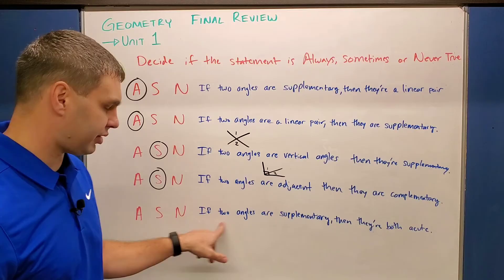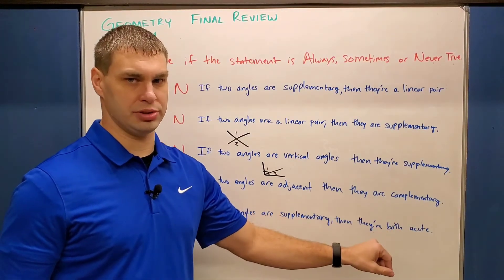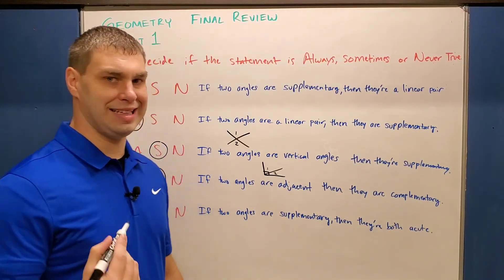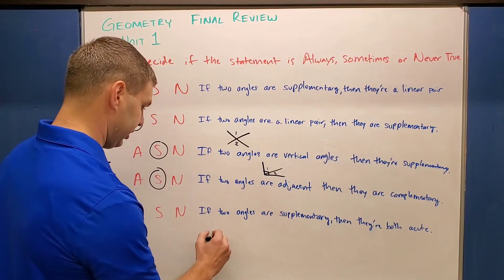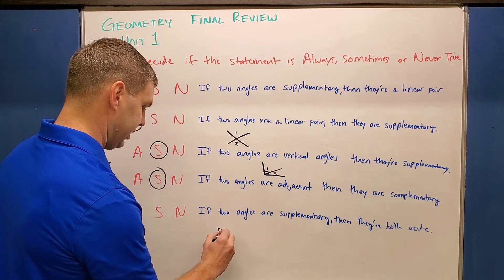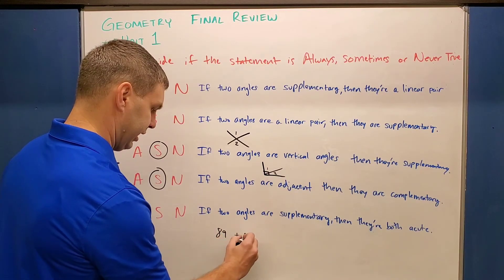All right, last one. If two angles are supplementary, then they're both acute. Well, acute means that they're less than 90 degrees. And if we have two, we can take it as close as we're going to get here. So let's say maybe 89 and 89.